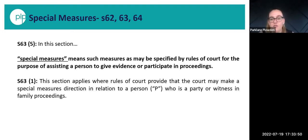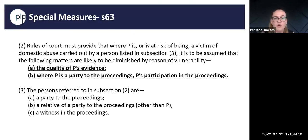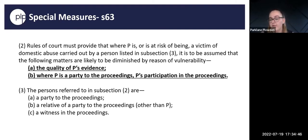The section applies where rules of court provide that the court may make a special measure direction in relation to a person who is a party or witness in family proceedings — so they don't need to be the applicant. It could be a witness for the applicant or even potentially a witness for the respondent or alleged perpetrator. If the person is at risk of being a victim of abuse or they are a victim of domestic abuse, it is assumed that special measures are needed because they are likely to have the quality of their evidence diminished by reason of their vulnerability, or their participation in proceedings overall if they are a party.